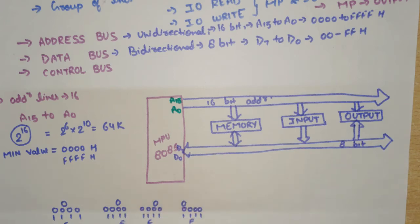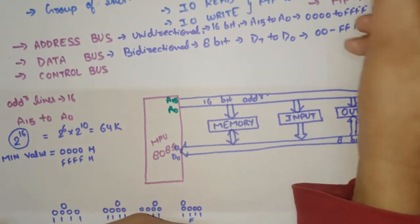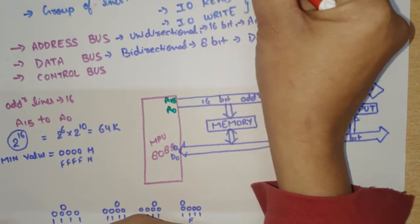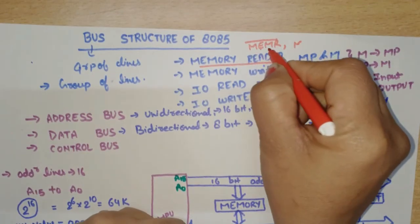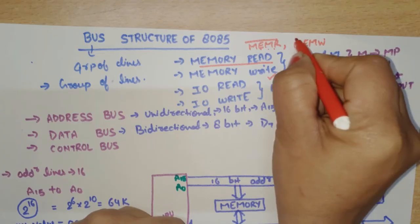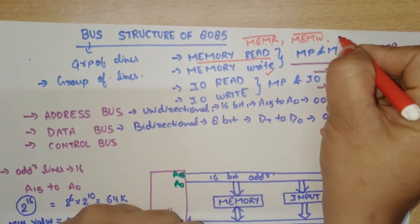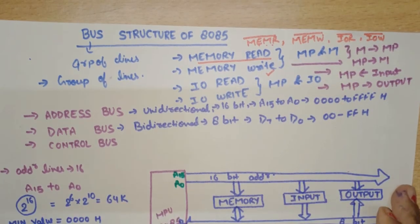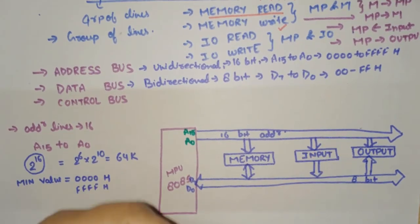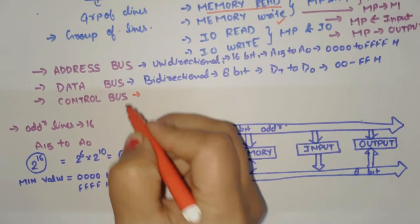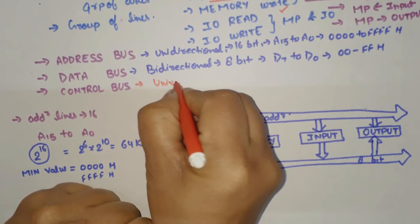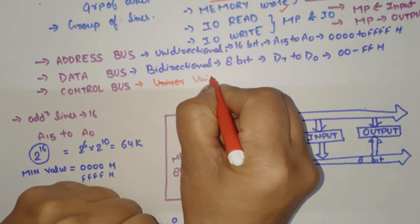The control bus consists of single lines which carry control signals indicating what operation the microprocessor is performing. For example, when the microprocessor performs a read operation, the signal MEMR bar is sent. For a memory write, MEMW bar is sent. For input/output communication, IOR bar and IOW bar signals are used. These four control signals are sent from the microprocessor to all devices so the devices know which operation to perform. The control bus is unidirectional because signals are generated from the processor.